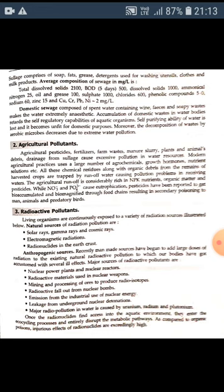Agricultural practices use a large number of agrochemicals, growth hormones, nutrient solutions, etc. All these chemical residues along with organic debris from the remains of harvested crops are trapped by runoff water causing pollution. Agricultural runoff is considerably rich in nitrogen, phosphorus and potassium nutrients, organic matter and pesticides. While nitrate and phosphate cause eutrophication, pesticides get bioaccumulated and biomagnified through food chains, resulting in secondary poisoning.